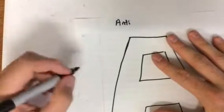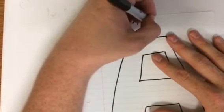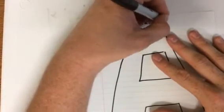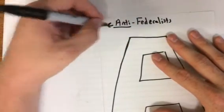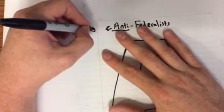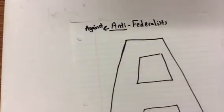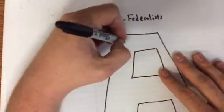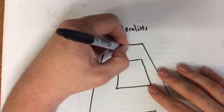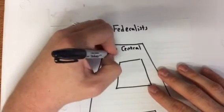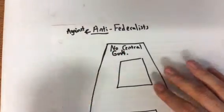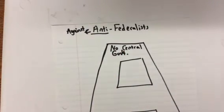On the other side we have the Anti-Federalists. The prefix 'anti' means they were against — they were against the Federalists. These are people that believed in the opposite direction. They wanted no strong central government.